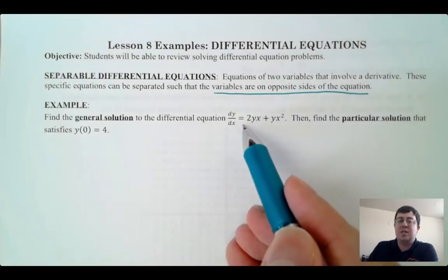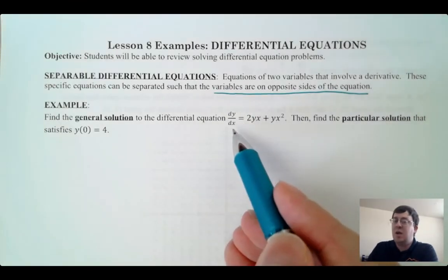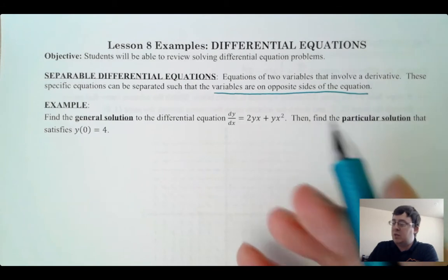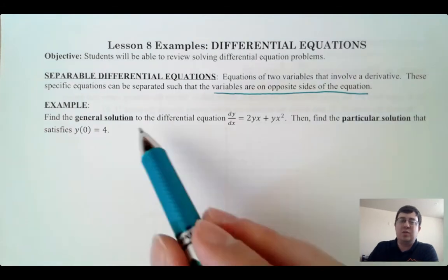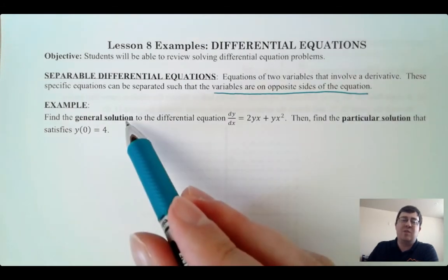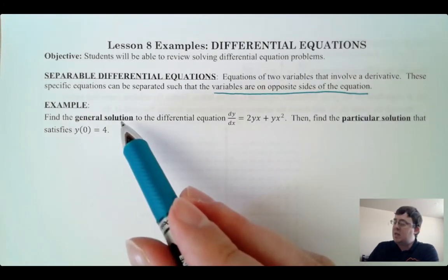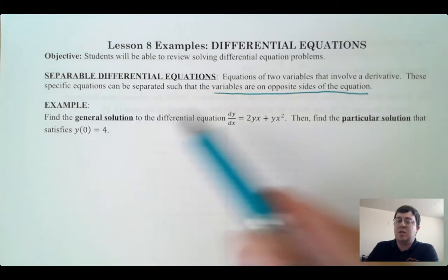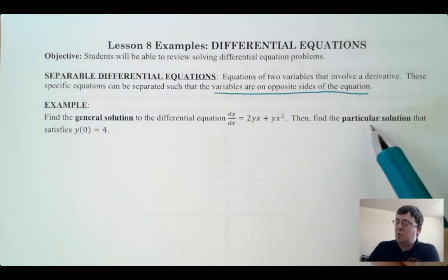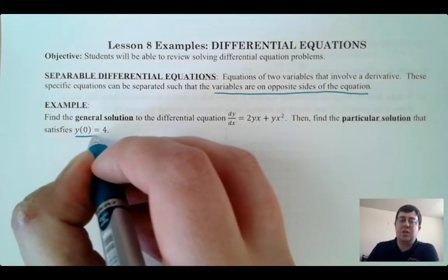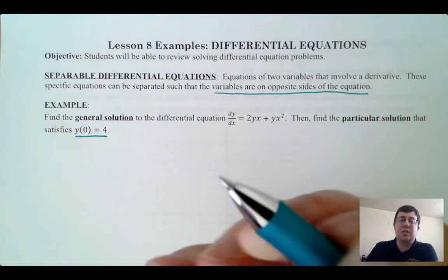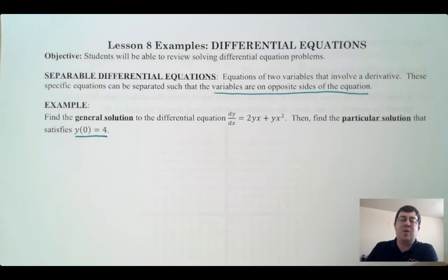We're going to do two things: find the general solution, which means involving the plus C, and the particular solution, once we know an initial condition — just some kind of value that we know.